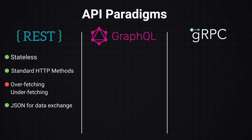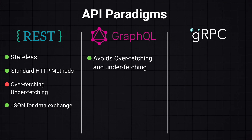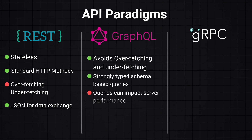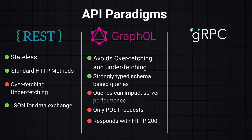On the other hand, GraphQL APIs allow clients to request exactly what they need, avoiding overfetching and underfetching. They have strongly typed queries, but complex queries can impact server performance. All requests are sent as POST requests, and GraphQL APIs typically respond with an HTTP 200 status code even in case of errors, with error details in the response body.